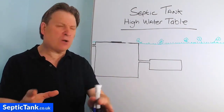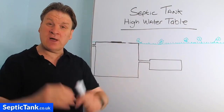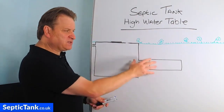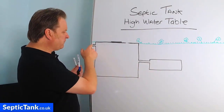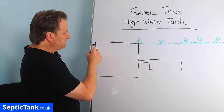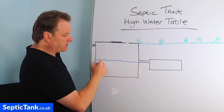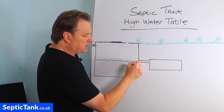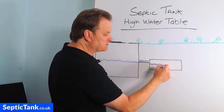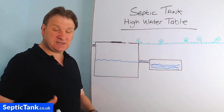Let me show you the problems that come from living in an area where the water table is quite high. So this is your septic tank and this is your soakaway. You've got your inlet pipe and your outlet pipe. Water comes into the septic tank and fills up to a certain level — this is your wastewater. It then makes its way down the outlet pipe and into the soakaway. That's how a septic tank and soakaway work.